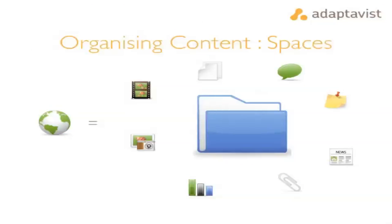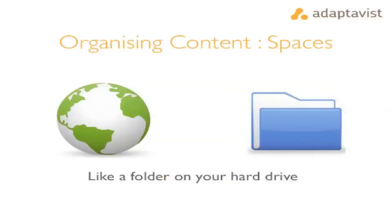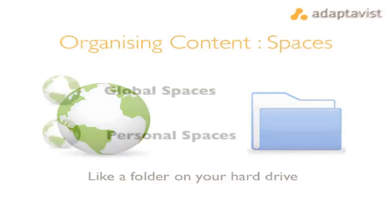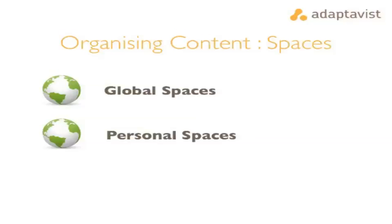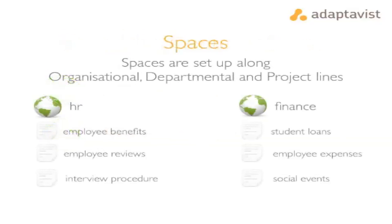Spaces are a key part of Confluence. Content is separated into spaces, and a space is like a folder on your PC or hard drive that holds related content. There are two types of spaces in Confluence: global spaces and personal spaces. Users all have the option to have a personal space, while global spaces are usually set up along team, departmental, or project lines.